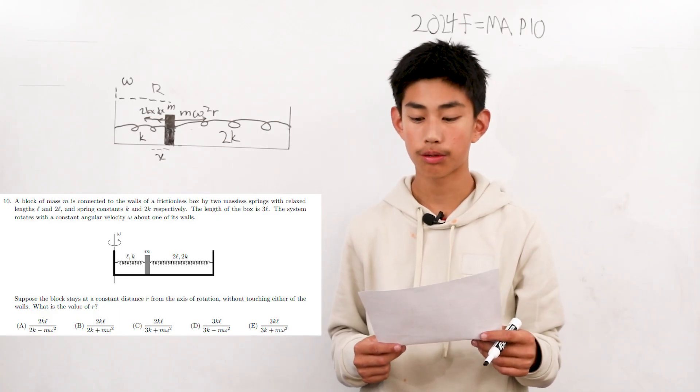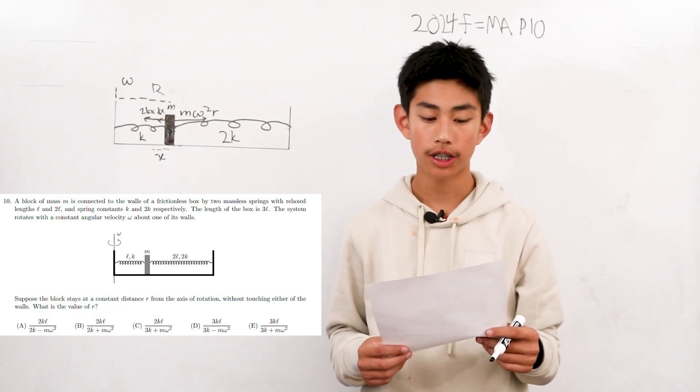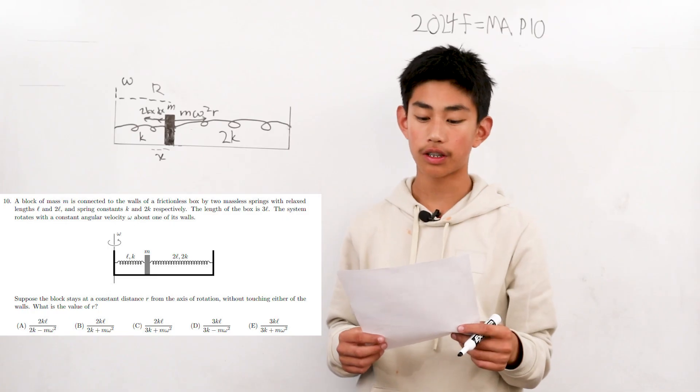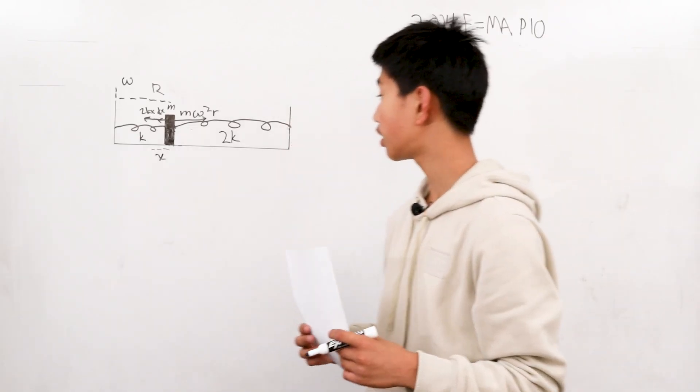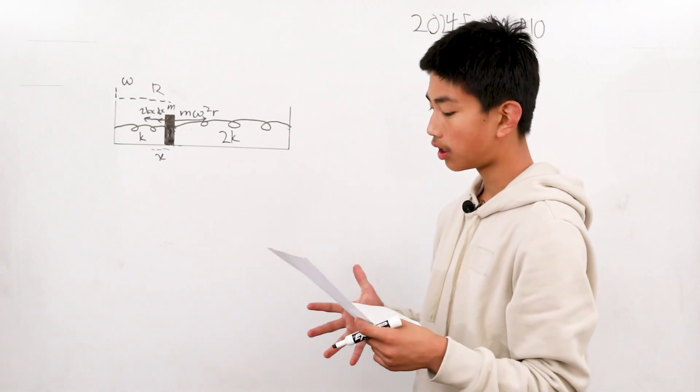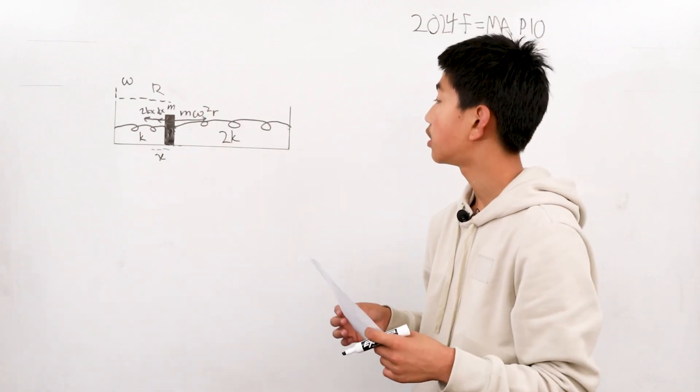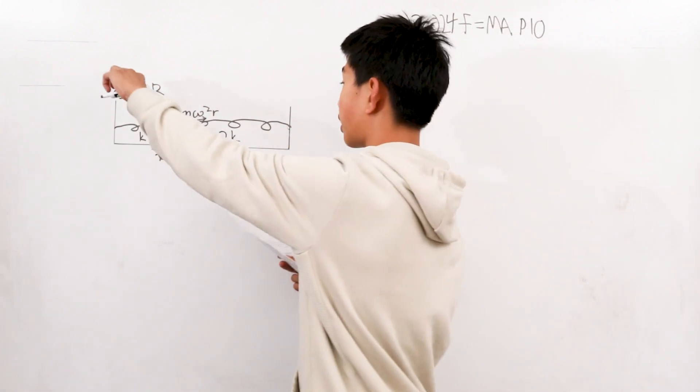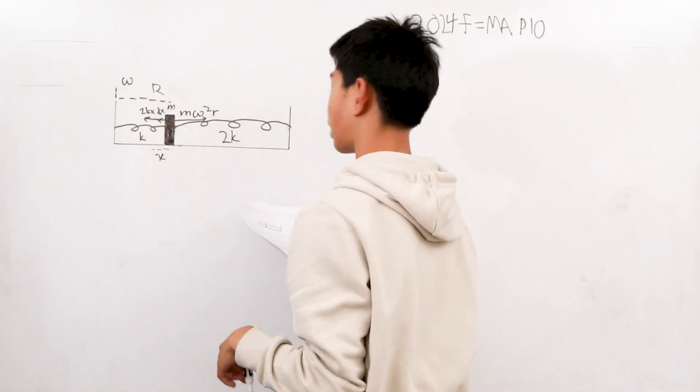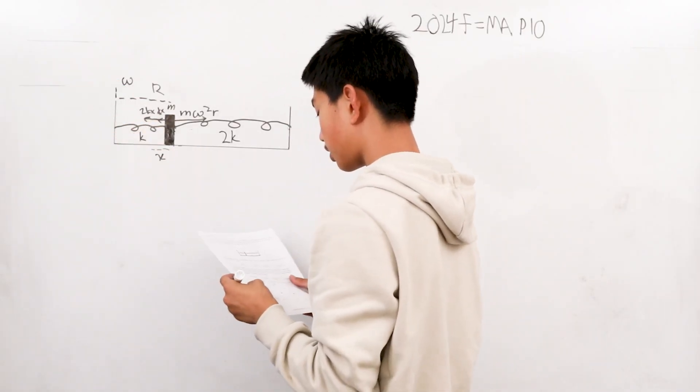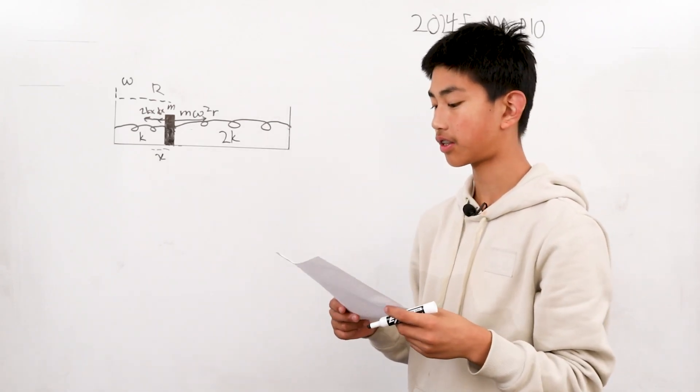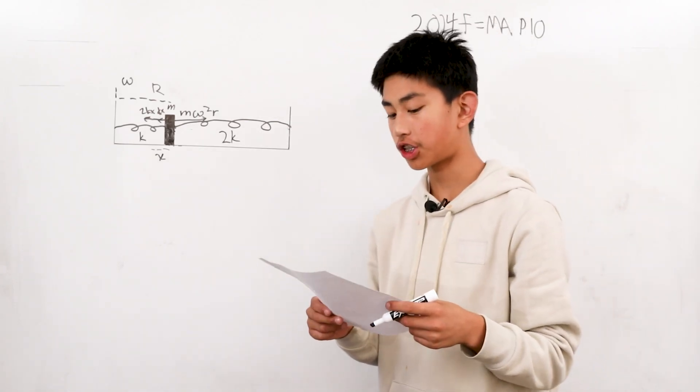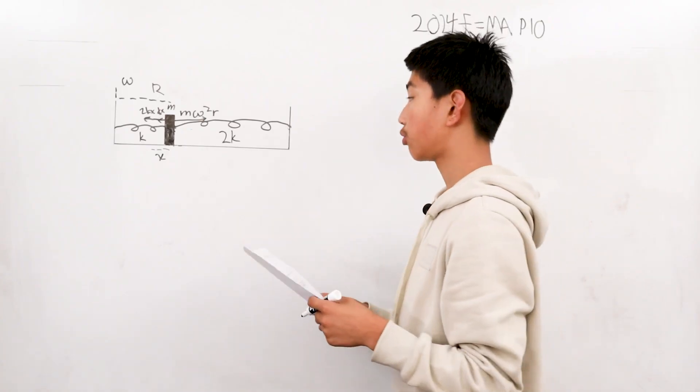The length of the box is 3L. The system rotates with a constant angular velocity omega about one of its walls and here we have all of these forces here. Suppose the block stays a constant distance R from the axis of rotation without touching either of the walls. What is the value of R?